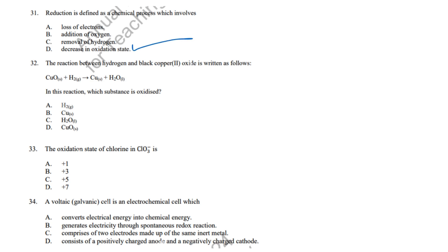Question 32: In copper oxide plus hydrogen-2-gas yields copper plus hydrogen-2-oxide, hydrogen-2 loses electrons, meaning it is oxidized. Correct answer: A, H2G. Question 33: Oxidation state of Cl in KClO3 is calculated as X plus 3 times negative 2 equals negative 1. Solving for X gives plus 5. Correct answer: C, plus 5.